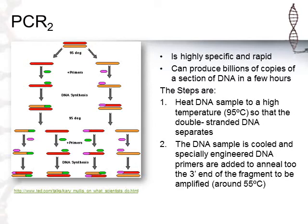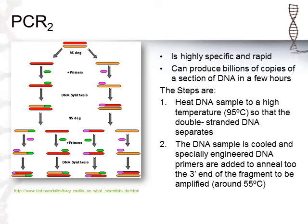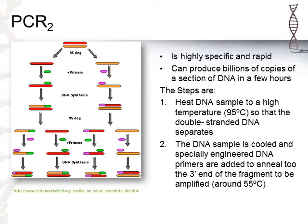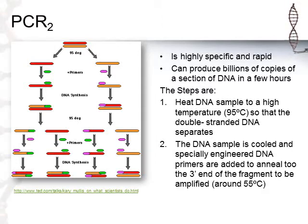We then cool the DNA and add a special DNA primer. We need to know a little bit about the sequence we're working with. The primer anneals to the three prime end of the fragment to be amplified — just like in replication where primers come in and DNA polymerase builds the other side. We cool down to about 55 degrees and allow the primers to anneal to the three prime end. In the graphic we can see a green primer for the red strand and a fuchsia primer for the orange-yellow strand.